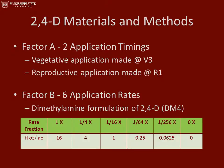Factor A were the two application timings: a vegetative application made at the V3 growth stage and a reproductive application made at the R1 growth stage. Factor B were the six application rates. We used the dimethylamine formulation of 2,4-D. We took a 1x rate, which is equivalent to 16 fluid ounces per acre, and fractionated it down all the way to a 1/256x rate. We also included a 0x rate as an untreated check for comparison.